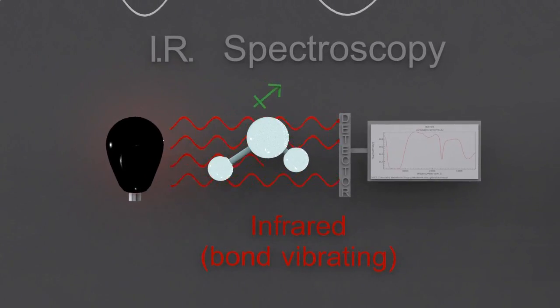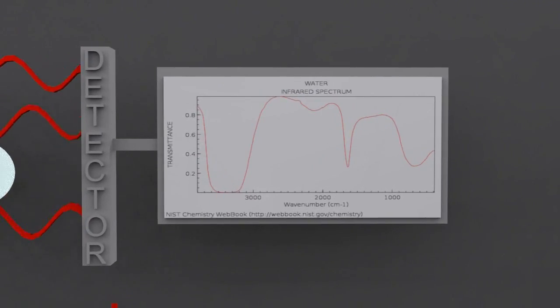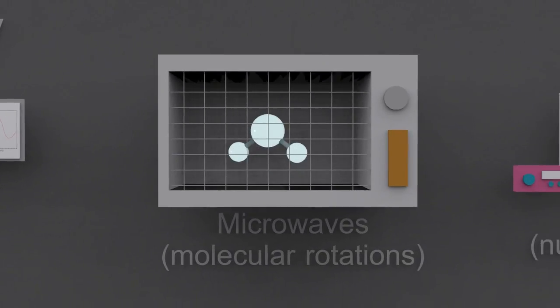Infrared radiation will cause some molecules' bonds to vibrate. If you sweep the molecule with different frequencies of infrared and find out which are absorbed, you'll get a spectrum like this, and the troughs in the spectrum can be correlated with a data booklet to identify the bonds in the molecule.